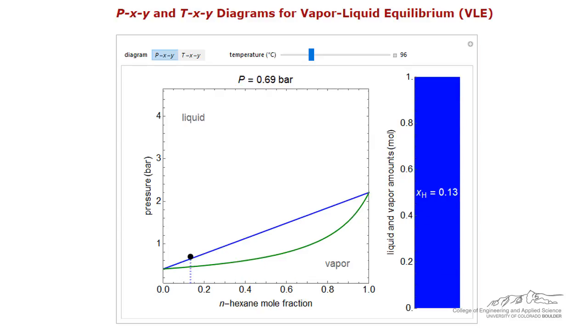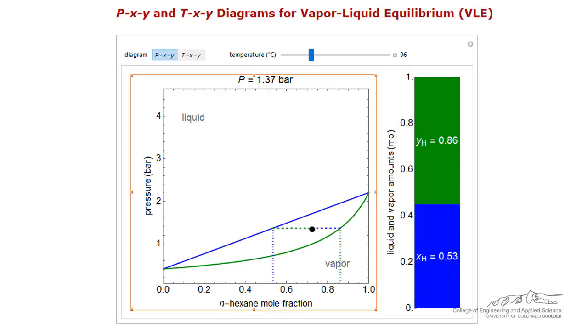The dynamic simulation allows us to move the cursor to various pressures and compositions. To end this screencast, we will go back to the two-phase region and will now adjust the temperature using the slider.